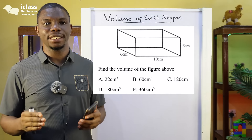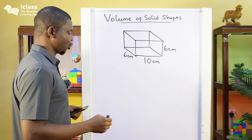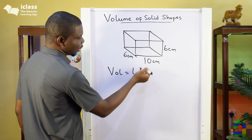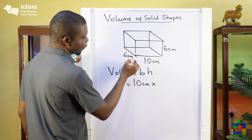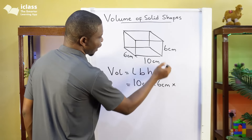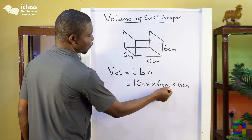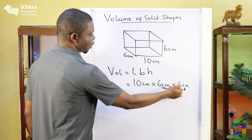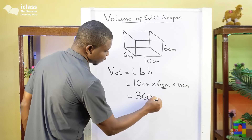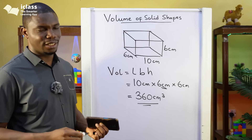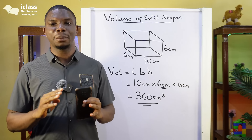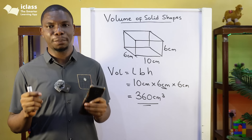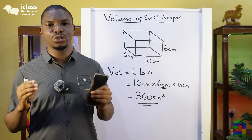Now to our first question: find the volume of the figure above. This is a cuboid, and the volume of a cuboid is length times breadth times height. The length is 10 centimetres, the breadth is 6 centimetres, and the height is 6 centimetres. So 10 times 6 is 60, and 60 times 6 is 360. We have 360 centimetres cubed. Remember, this is a practice question — you don't practise maths by watching videos, you practise with your pen and paper. So if you don't have your pen and paper, go and get it as we move on to question number 2.